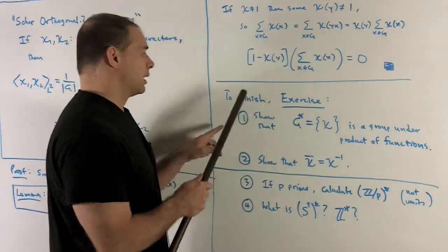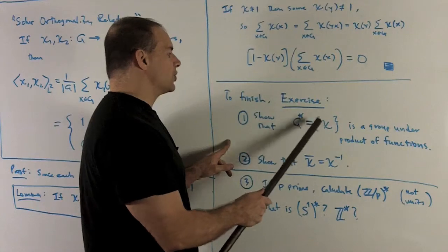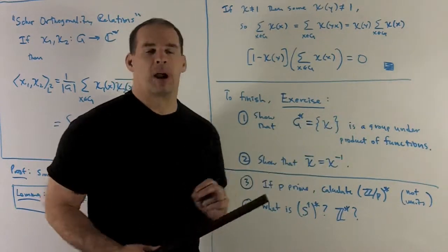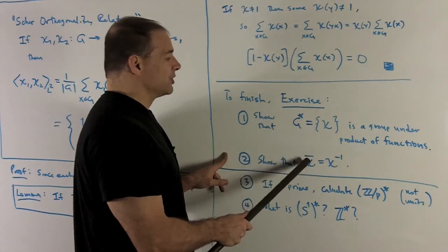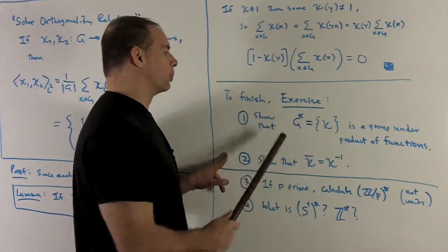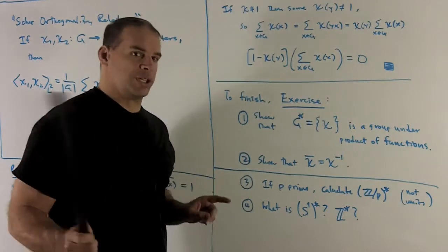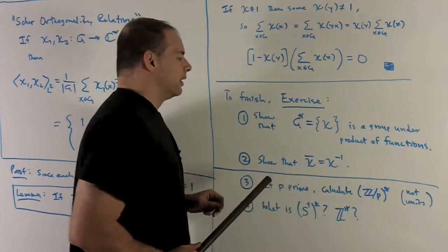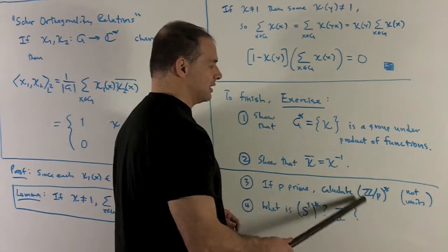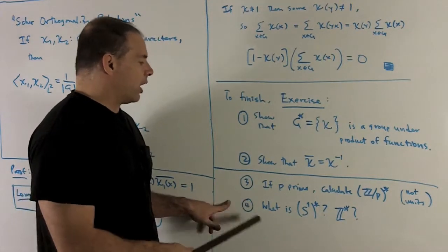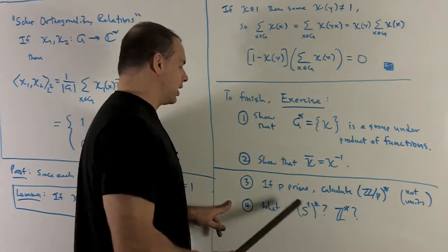To finish off and get our theorem, here are some exercises. First, if we take all the characters of G — call that G* — show that G* is a group under pointwise product of functions. Once you have that, also show that the conjugate of any character gives another character, which is the inverse character for the group. That's enough to complete the theorem. Further exercises: if p is prime, calculate what the character group for Z mod p is going to be — note I'm not using units. And although it's not in the same context of finite abelian groups, you can also ask about the characters of the circle and of the integers, and what the connection between the two is.